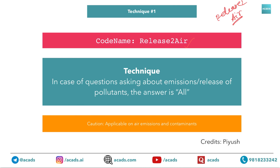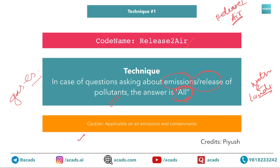So this technique — Release 2AO — is straightforward: in case of a question asking about emissions or release of pollutants in air, most of these are gases, and the answer is mostly 'all.' The caution is that this is applicable to air emissions and contaminants only. If it is water or land, generally this does not apply — in fact for water and land there may be one outrageous option, like plutonium, einsteinium, or any other random element.